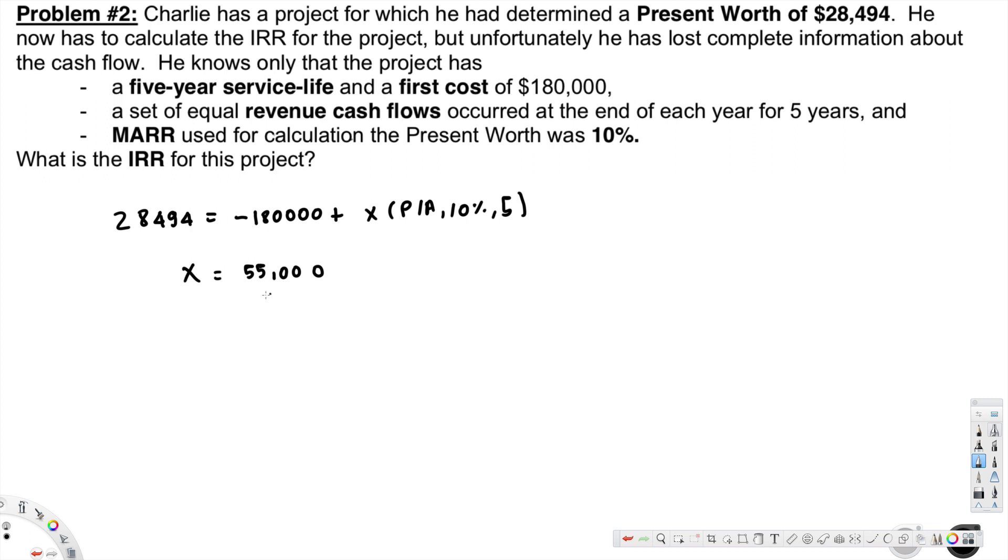Now we calculate IRR from 180,000 (the first cost) that is equivalent to X times (P/A, i*, 5). Now we have to find out what is i*. To find i*, we can do linear interpolation.